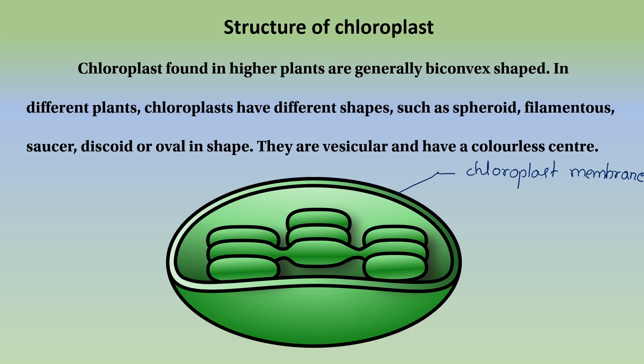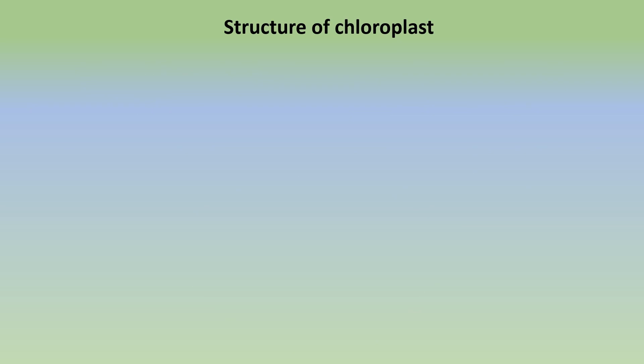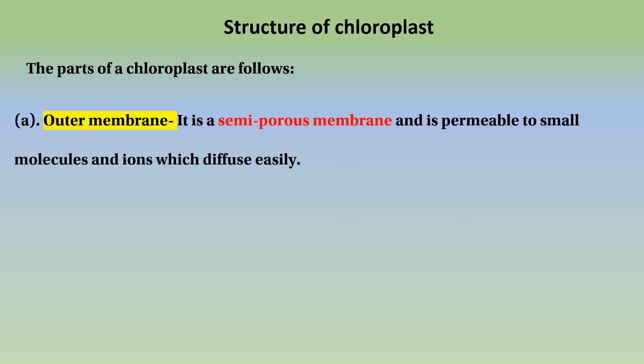These are the vascular and colorless centers. This is the chloroplast — it has an outer membrane. It is a semipermeable membrane and is permeable to small molecules and ions, which diffuse easily.